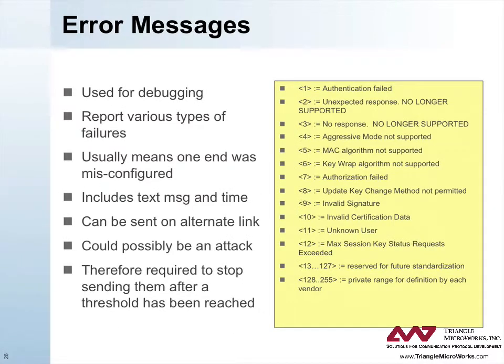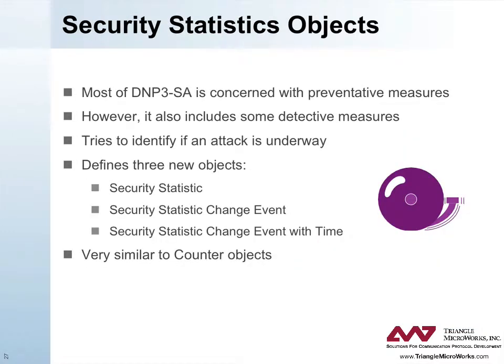Error messages report various types of failures and are often used for debugging. They include a text message and a timestamp and can be sent on an alternate link. An error message usually means that one end was misconfigured, although they could indicate some type of attack. Consequently, the specification requires that they stop being sent after a threshold has been reached. Most of DNP3 secure authentication is concerned with preventative measures; however, it also includes some detective measures in order to attempt to identify if an attack is underway. The specification defines three new objects for security.